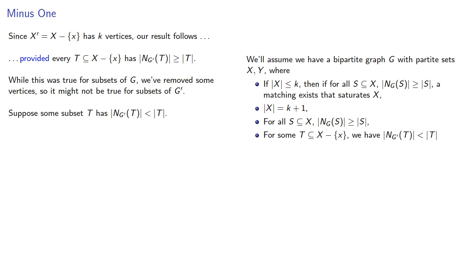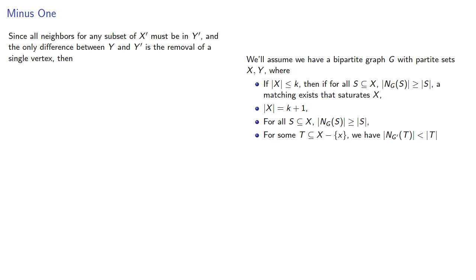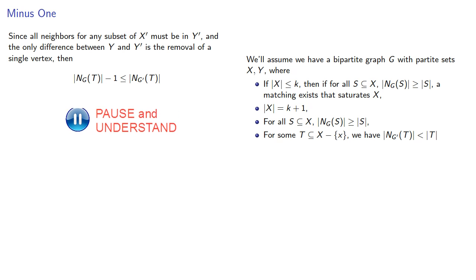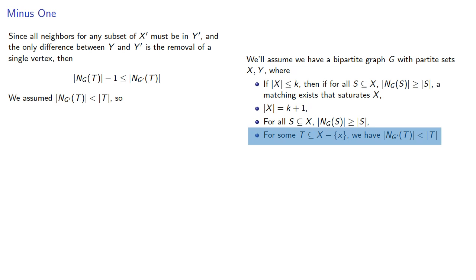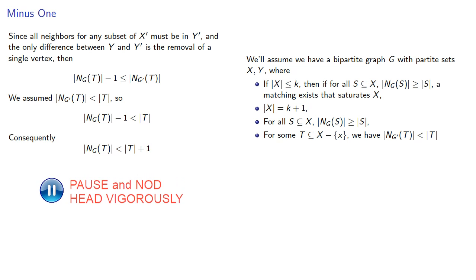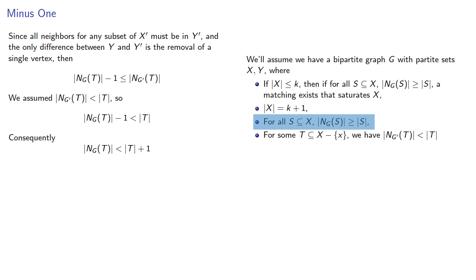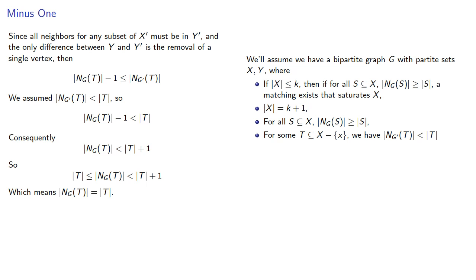Since the neighbors for any subset of x prime must be in y prime, and the only difference between y and y prime is the removal of a single vertex, the neighborhood of t in g prime must be at least as large as the neighborhood of t in g minus 1. We assumed the neighborhood of t in g prime was smaller than t. But since t is a subset of x and the neighborhood of any subset of x is at least as large as the set itself, the neighborhood of t in g must be the same size as t itself.